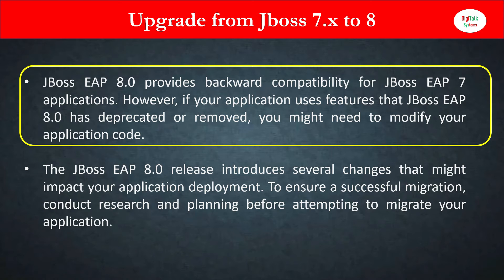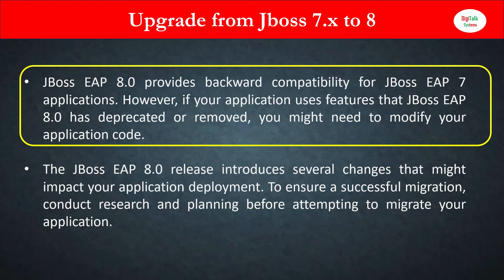JBoss 8.0 provides backward compatibility for JBoss EAP 7 applications. However, if your application uses features that JBoss EAP 8.0 has deprecated or removed, you might need to modify your application code. Backward compatibility only applies to features that remain unchanged between 7 and 8. For any feature that has been deprecated or removed in the new version, you must update your application to remove those deprecated functionalities before migrating from 7.x to 8.0.